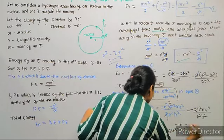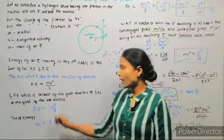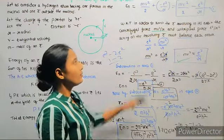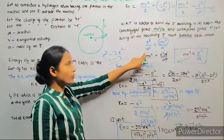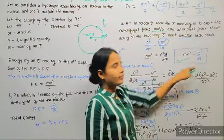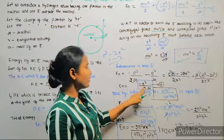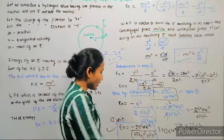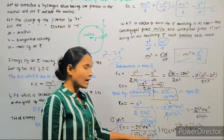To summarize the derivation: we took total energy En = KE + PE, called it equation one. We balanced the two forces F1 = F2 (centripetal equals centrifugal) to get mv² = e²/r. Substituting mv² back into equation one gives En = −e²/(2r). Substituting the radius value r = n²h²/(4π²me²) yields the final equation En = −2π²me⁴ / [(4πε₀)² n²h²].